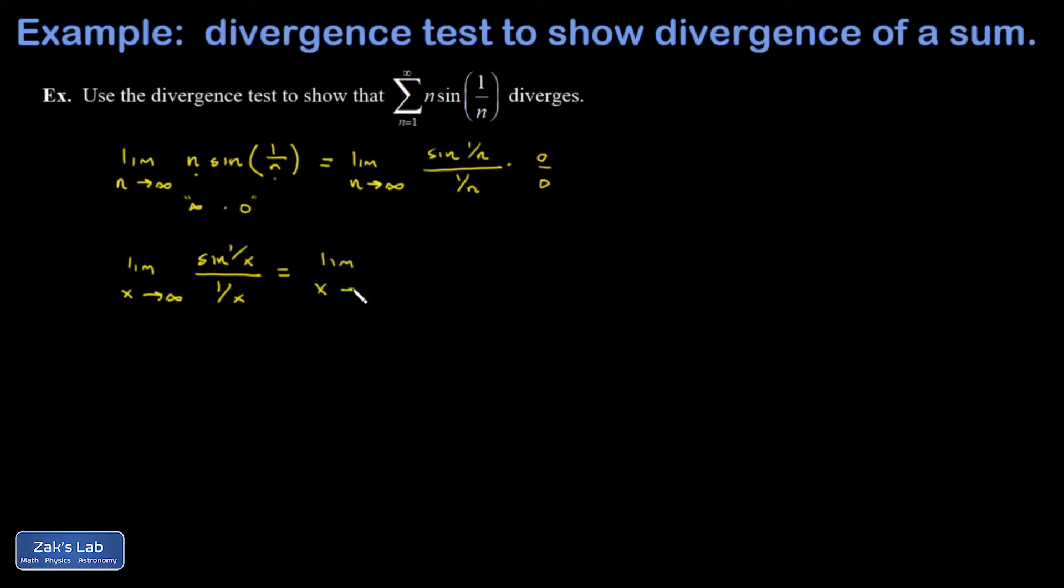So I apply L'Hopital's rule. I take the derivative of the top. That gives me cosine of 1 over x. And then the chain rule says you have to multiply by the derivative of 1 over x. 1 over x is x to the negative 1. And when you apply the power rule, you get negative 1 over x squared. Well, I get the same thing in the denominator, the same thing as I got from the chain rule part in the numerator. And those are going to cancel out.